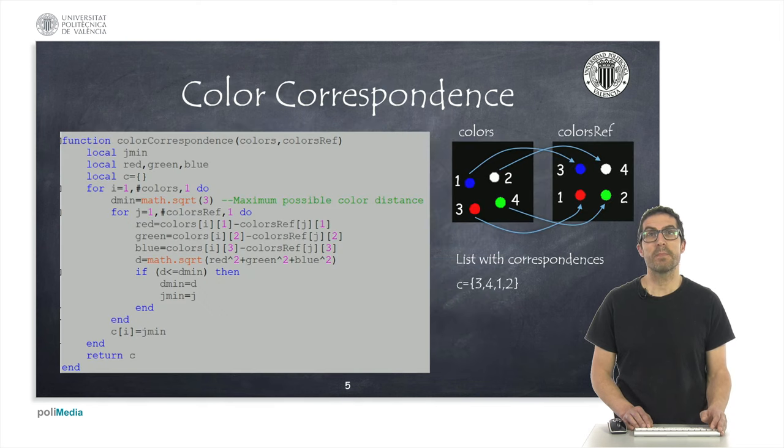In order to compute the error between the detected features and the reference features, we must establish a prior correspondence between them. For this reason, when detecting objects, we also detect the colors in addition to the features position.